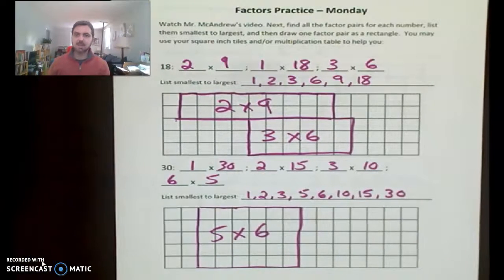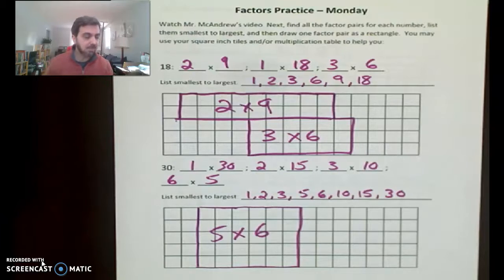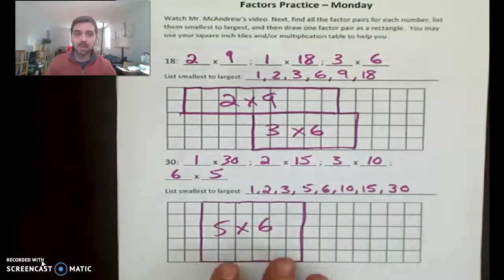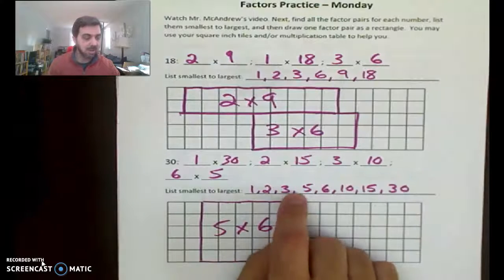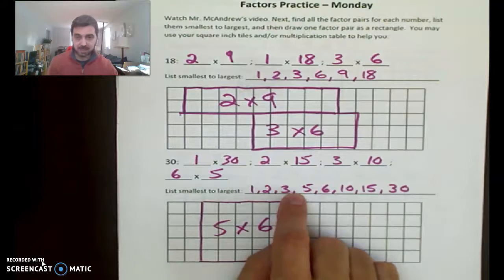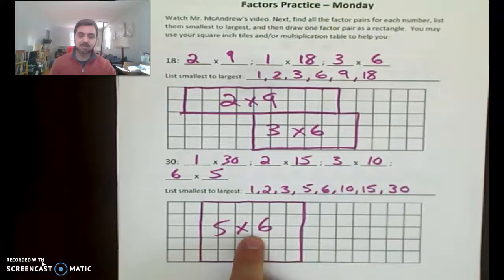This video, I think I'll just focus on reviewing what you did yesterday and it'll be short and then we'll get into another video where we dive into multiples. How's that sound? Okay. So we had found all the factor pairs for 18. Okay. These are all the factor pairs for 30. All right. And I drew one of the rectangles that you might have discovered.